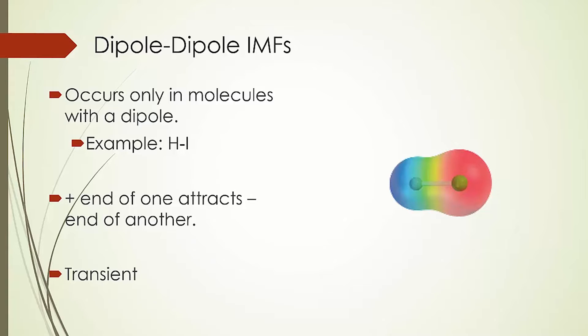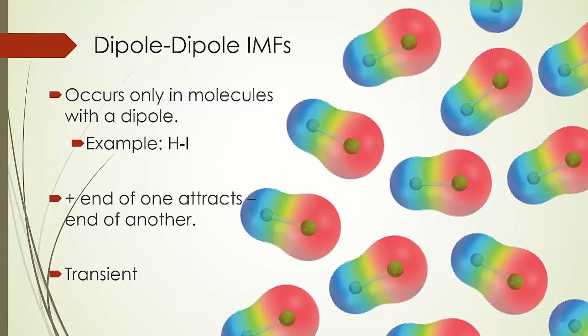While here we only have a static picture for the sake of illustration, these are actually constantly being formed and rebroken. They are constantly interacting with other molecules around them, so we call them transient. In reality, you should think of each of these molecules as spinning and interacting with all of the ones around it.